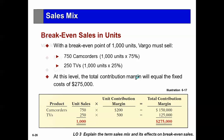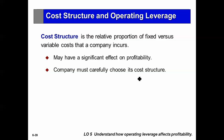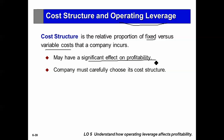Another concept: cost structure as related to operating leverage. The cost structure is the proportion of fixed costs versus variable costs. A company consciously decides how much of its expenses should be variable and how much fixed. This percentage between fixed and variable has a significant effect on profitability — that's why companies pay a lot of attention to cost structure. This is operating leverage. In your managerial finance course you may cover financial leverage involving debt and equity, but here we're talking about operating leverage.